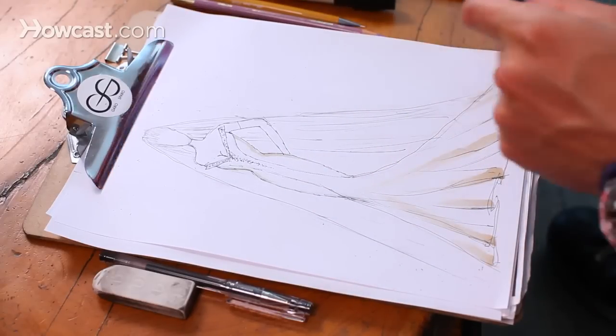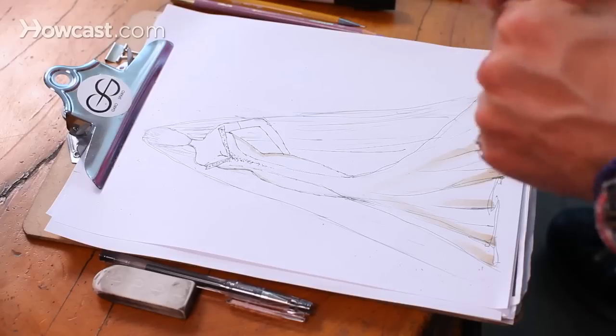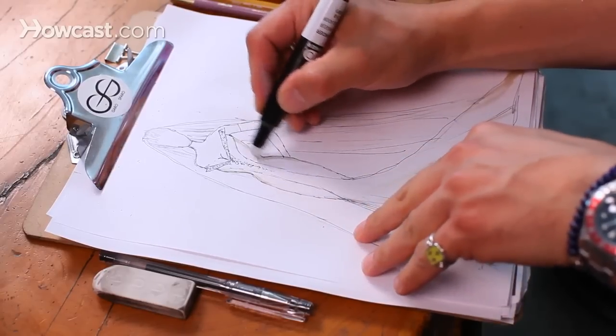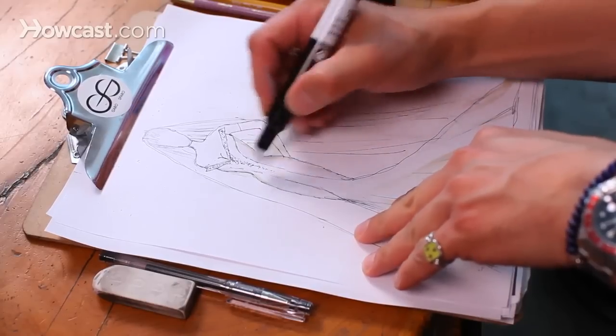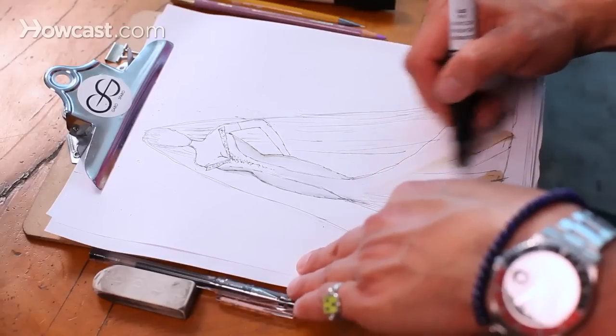Once you've done that, you have your blender, which is basically just a clear marker to bring that color in and shade it in. It may look like it's turning the whole thing gray, but that will fade.